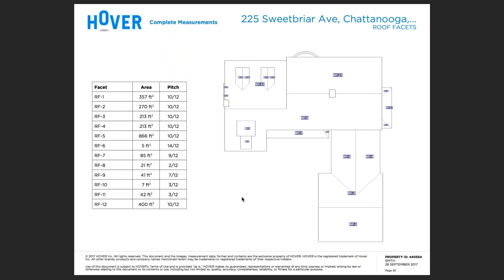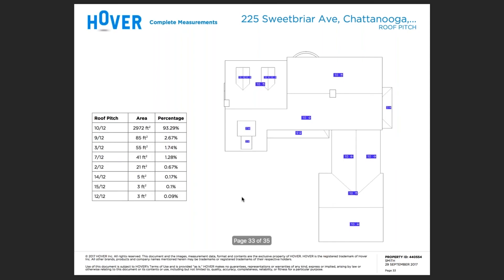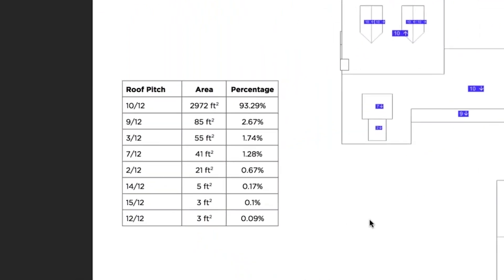Under the roof facets page, we'll label each individual roof area. The roof area will provide you the square footage area and pitch. On the roof area page, we'll populate the square footage of roof area on each individual roof plane. On the roof pitch report, we'll populate the actual pitch by roof section on the actual report. On the left-hand side, you'll find a table that will give you the complete breakdown of pitch on the entire structure.